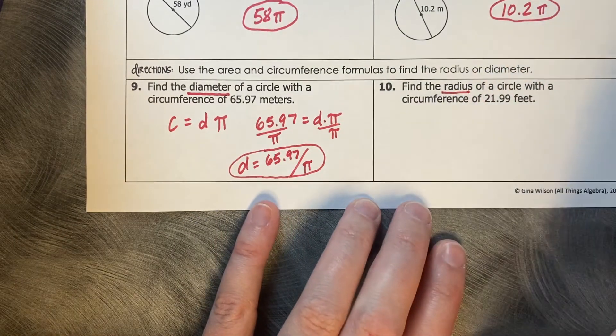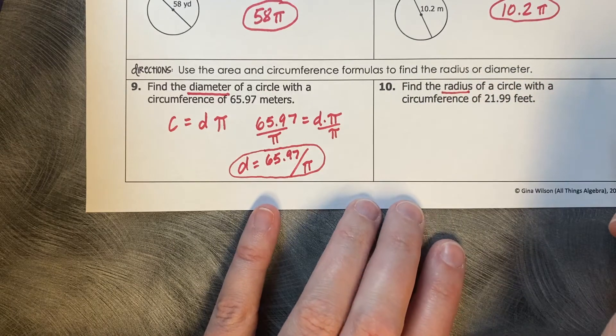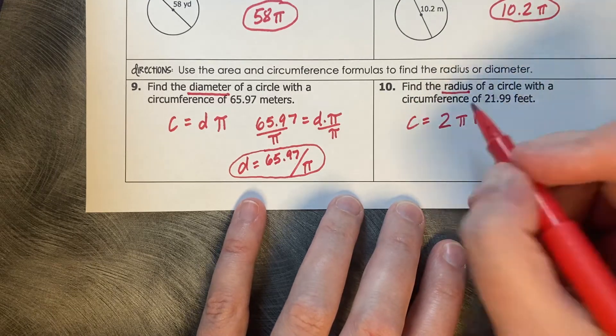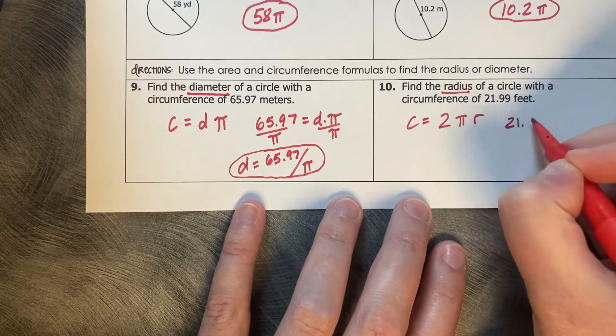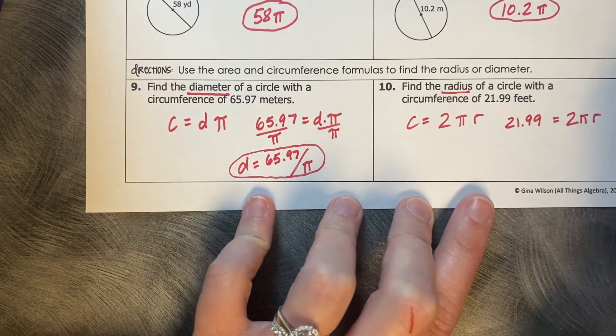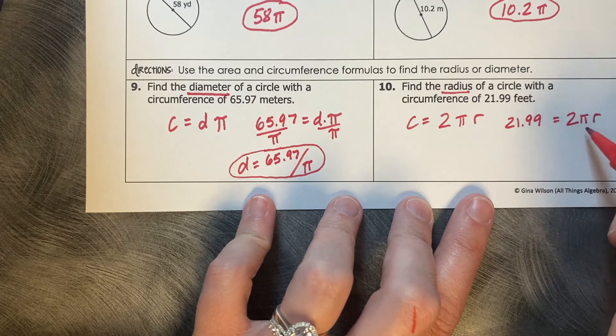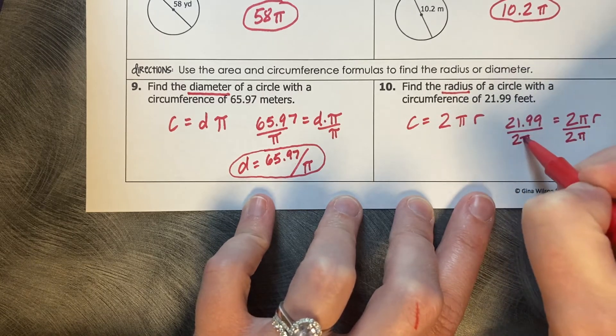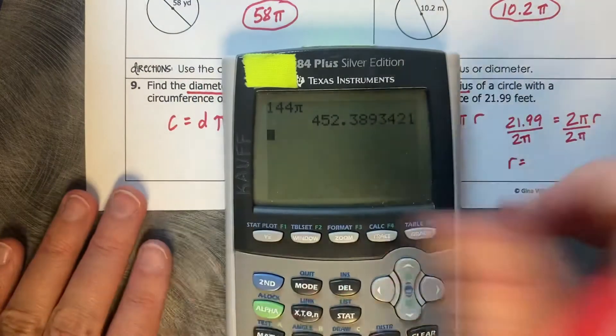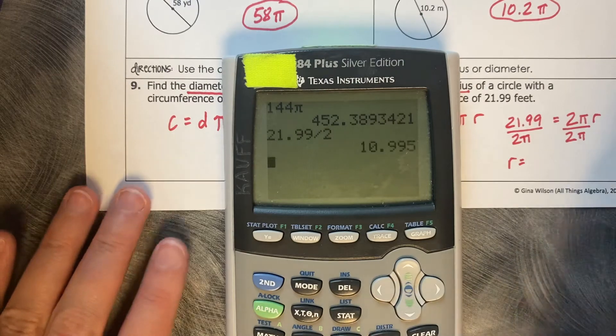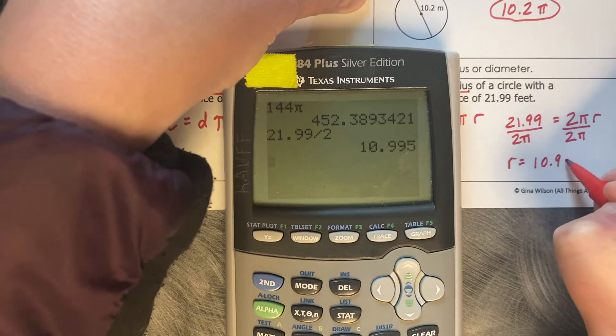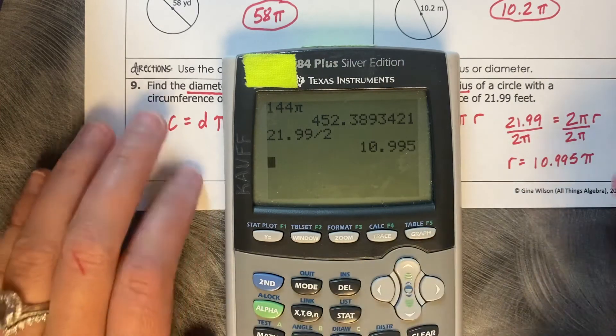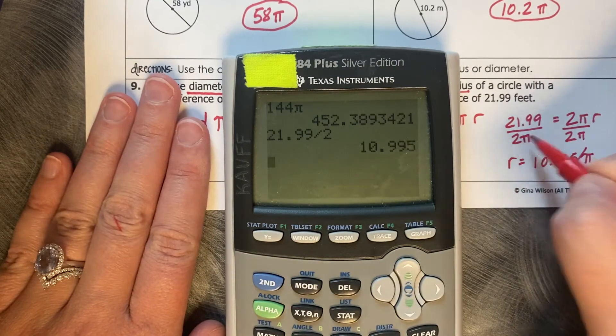This one says find the radius of a circle with a circumference of 21.99 feet. So let's use the one that uses a radius. Circumference equals 2 times pi times r. Try and get to r. Circumference is 21.99 equals 2 times pi times r. We're trying to get to the radius. So we need to take the 2 and the pi off. They're all joined together with multiplication, so we can take them all off at the same time with division. So r equals, and in this case, what you can do is just the 21.99 divided by 2. So then an exact answer here would be 10.995—I'm sorry—divided by pi. Because the pi is in the denominator.